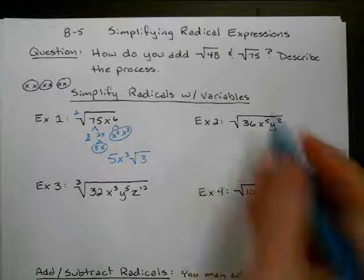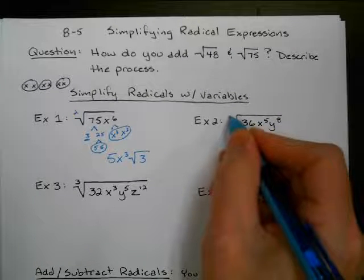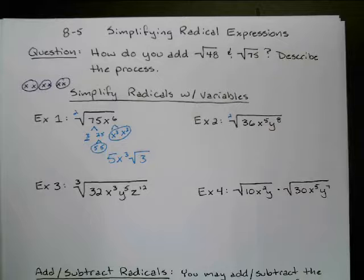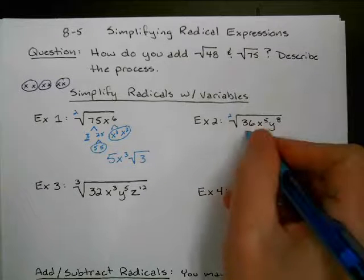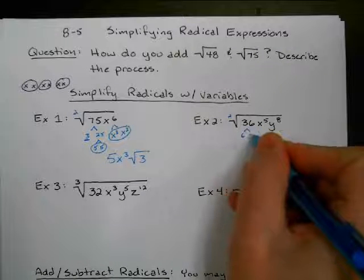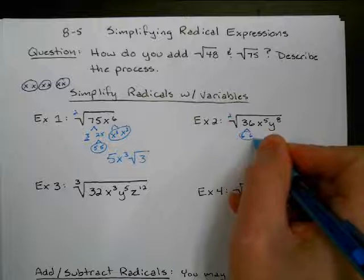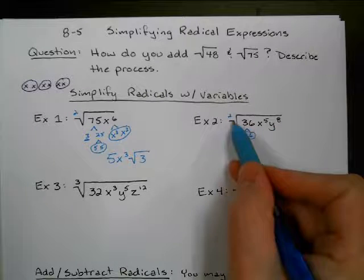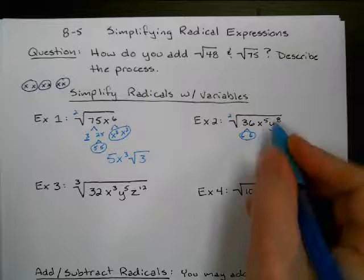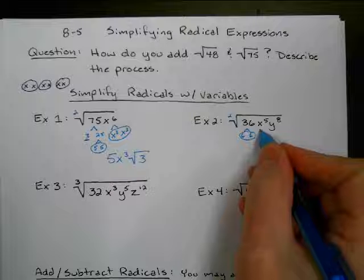Next one. Again, there's no number up there. That means we're looking for 2 of a kind because our index is 2 when there's no number there. Well, this is pretty simple. 6 and 6. Easy peasy. Problem? 2 doesn't go into 5. Dang it. I knew there was going to be something hard here.